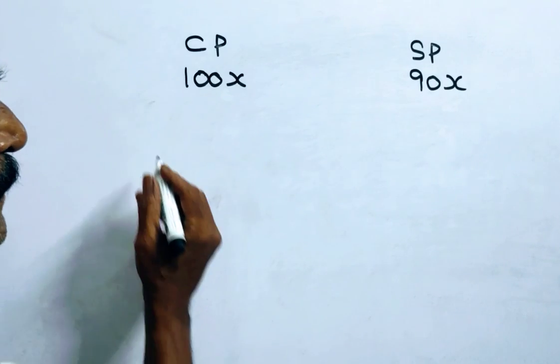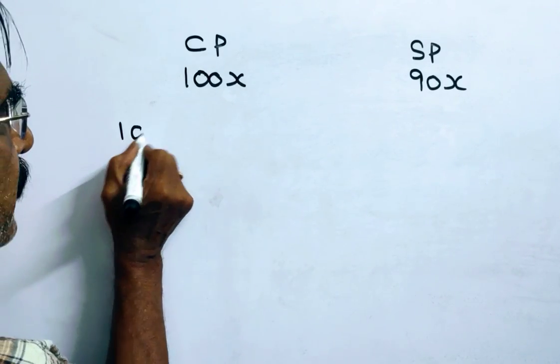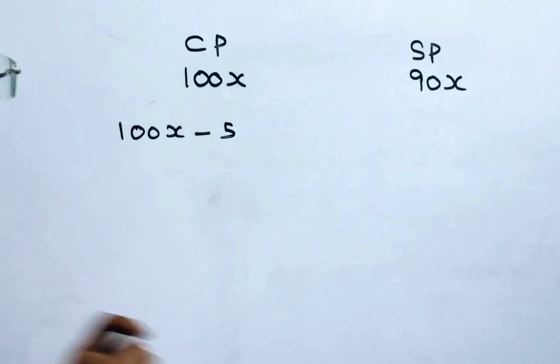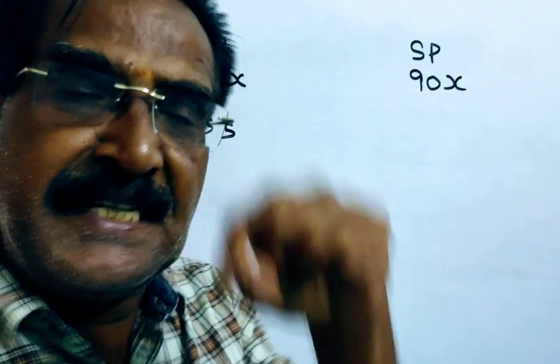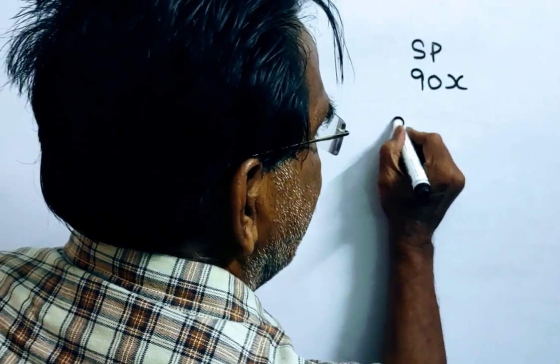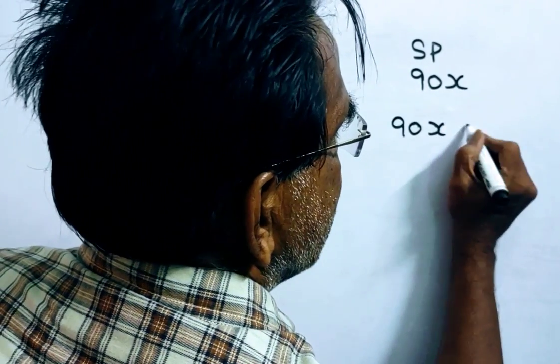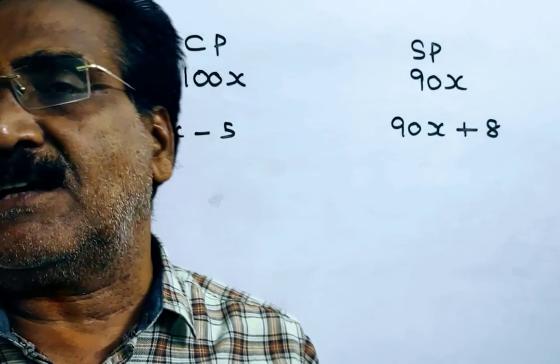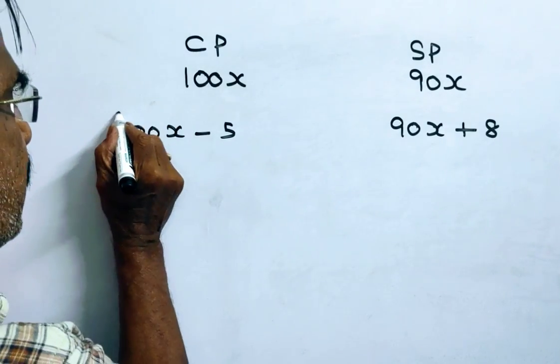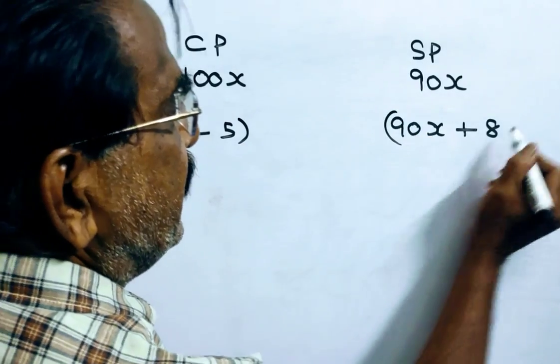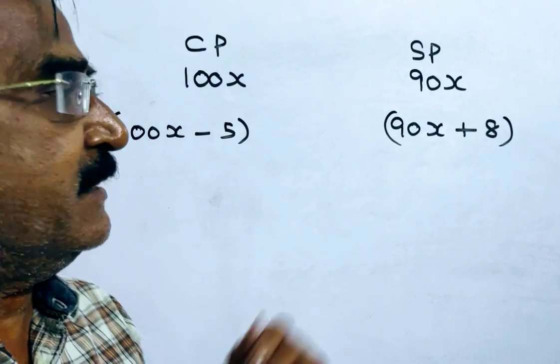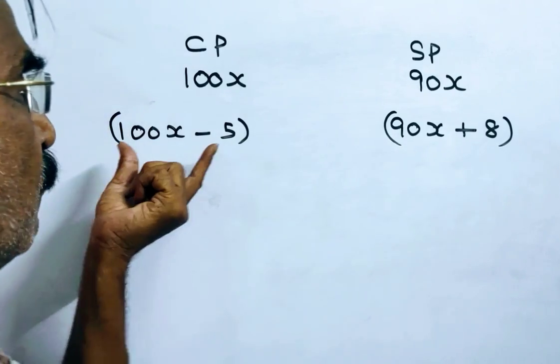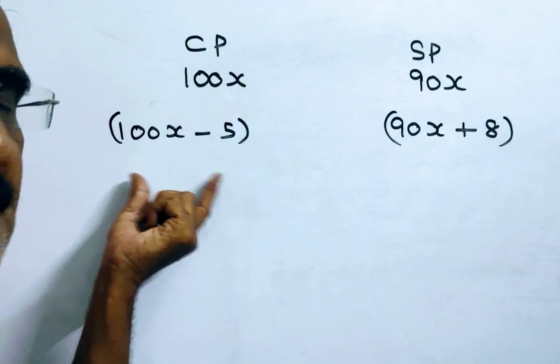Now, if the cost price is decreased by Rs.5 and the selling price is increased by Rs.8, then he gets a profit of 10%. So, by doing this, he gets a profit of 10% means this selling price is 110% of this cost price.